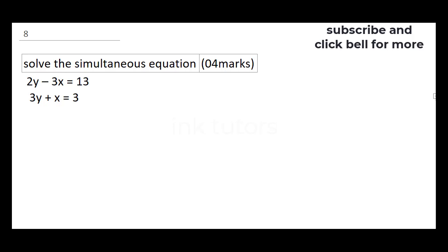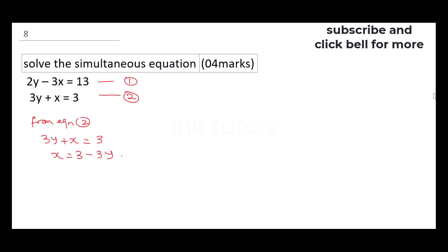Question 8 says: solve the simultaneous equation. There are several methods — you can use the matrix method, substitution method, or elimination method, whichever you are comfortable with. I'll call the first equation 1 and the second equation 2. From equation 2 — 3y + x = 3 — I'll make x the subject: x = 3 − 3y, and I'll call this equation 3.